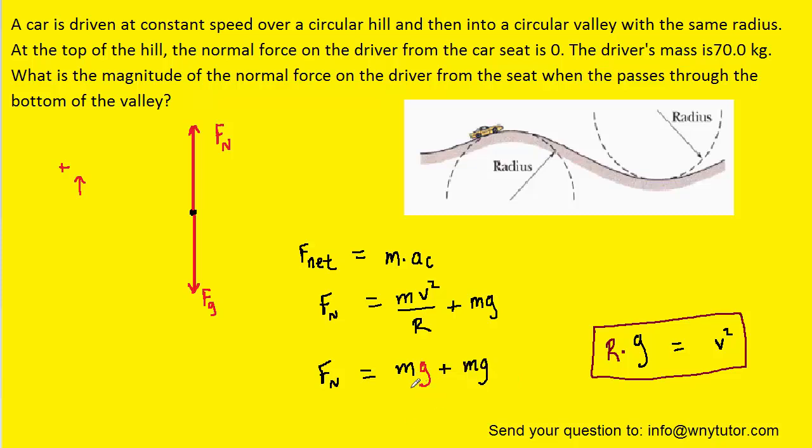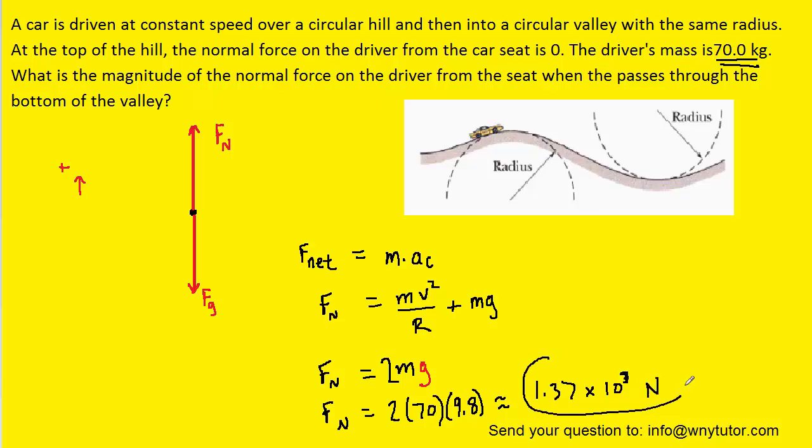So then we're just left with the sum of mg and mg, which of course is just 2mg. And since we were given the mass of the driver, we can plug that in as well as 9.8 for g. And when we calculate that, we get approximately 1.37 times 10 to the third. And since this is a force that we're computing, the unit will be in newtons. And that is the correct answer.